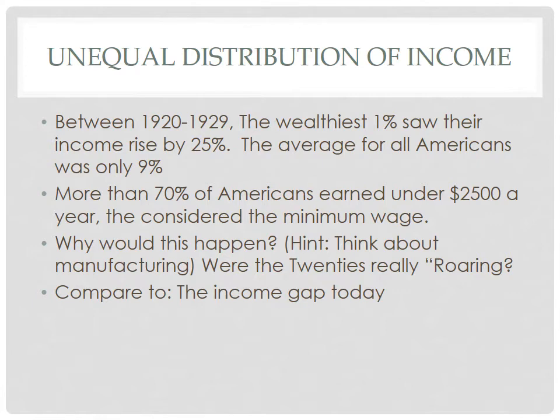The third cause: unequal distribution of income, which we can relate to today. This goes with the false prosperity — people assumed Americans were doing well because they had all these products, when in fact only the top 1% were seeing an actual huge increase in their income. This gap means a lot of middle class and lower class Americans were actually falling short. Eventually, those people couldn't afford to purchase manufactured goods or high-end appliances, which led to the decline of manufacturing.